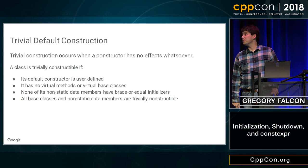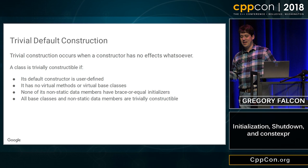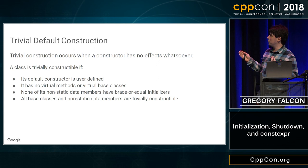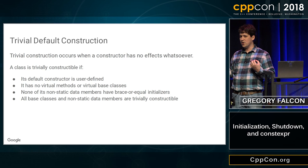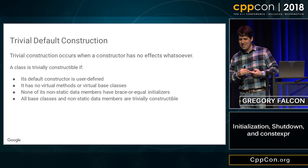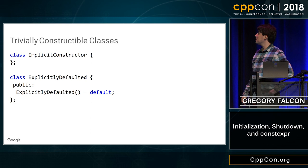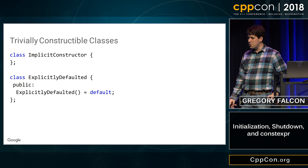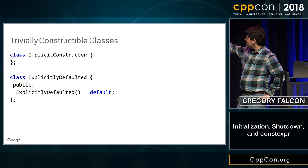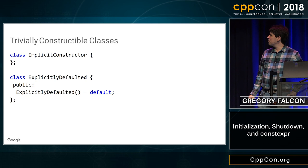If an object undergoes trivial default construction, its lifetime doesn't get lopped off on the front end. What makes a class trivially constructable? The thing you have to know is: if your constructor is truly a no-op — if the constructor doesn't do anything — then you're fine. It can't set up a vtable, it can't initialize any members. The first example: we don't define a constructor at all, so we just get the default one from the language. The second: we define one but explicitly say '= default'. In these two cases they don't have a user-provided default constructor, so these are trivially constructable classes.